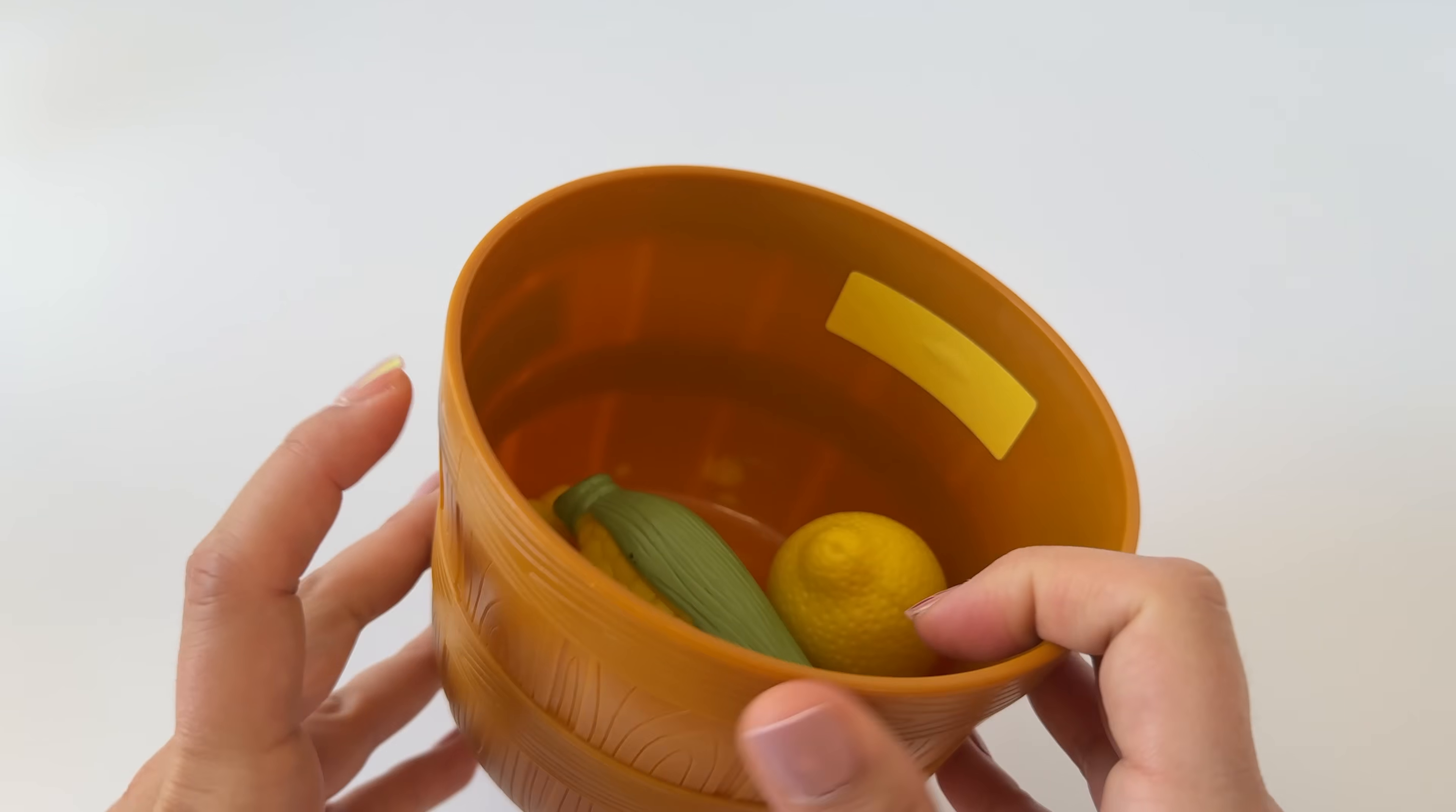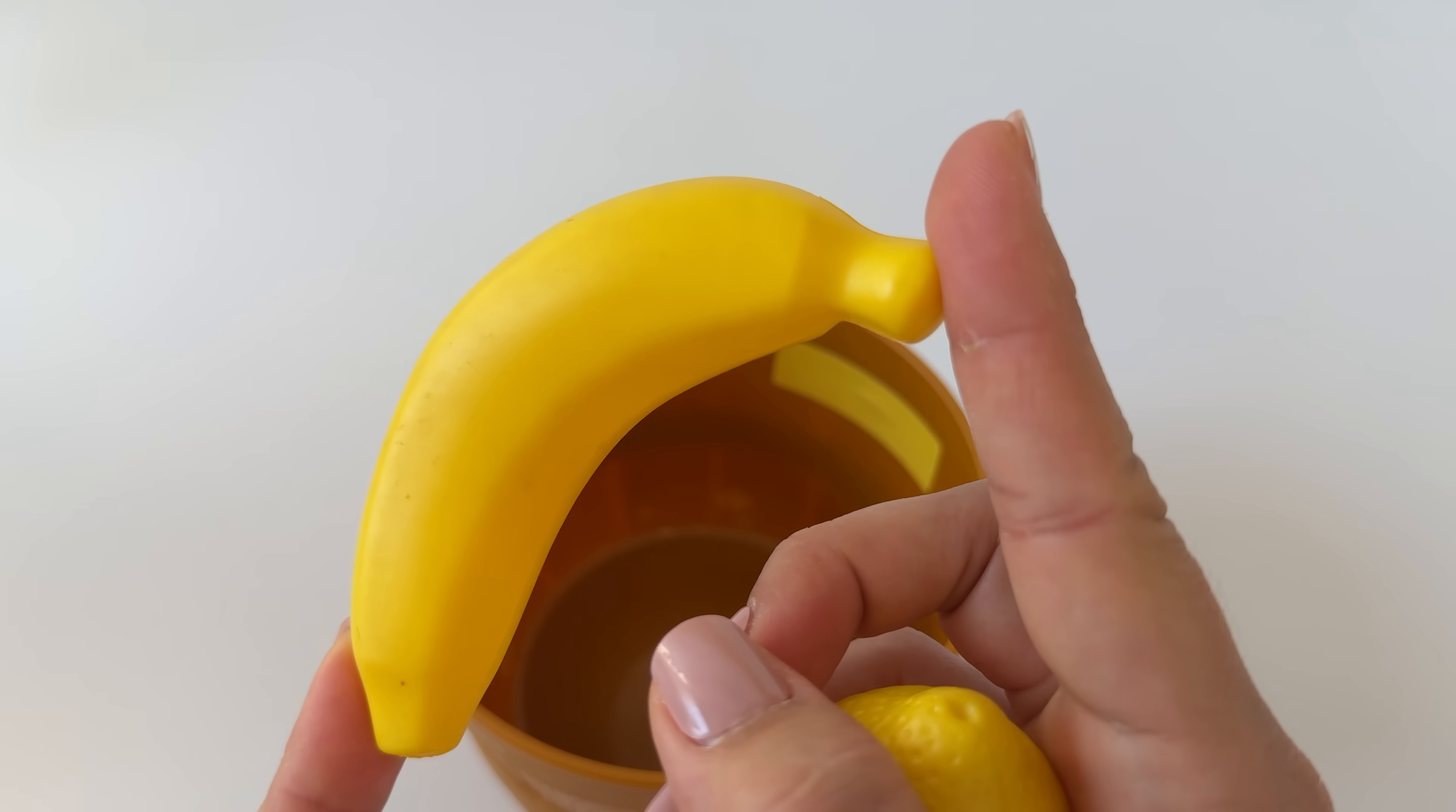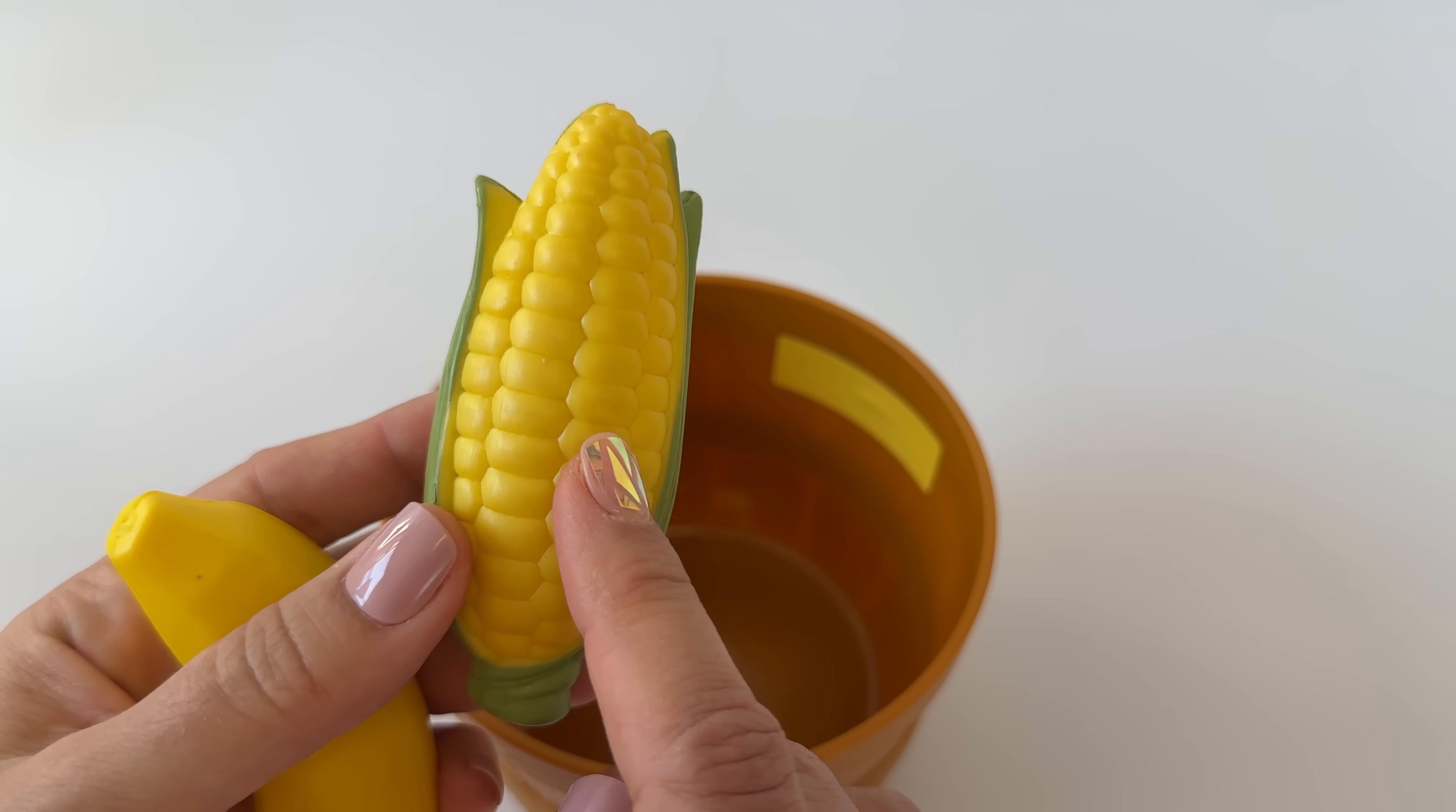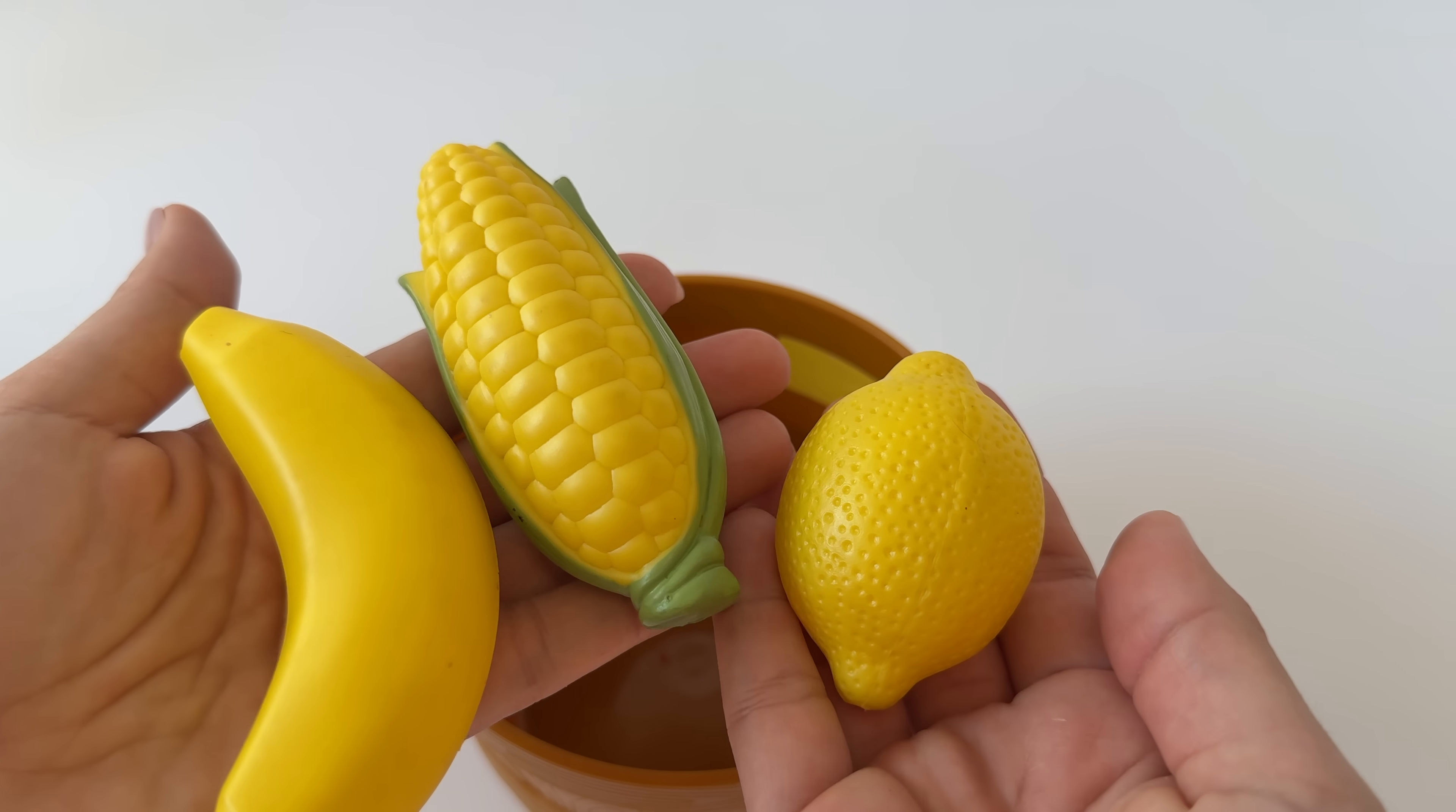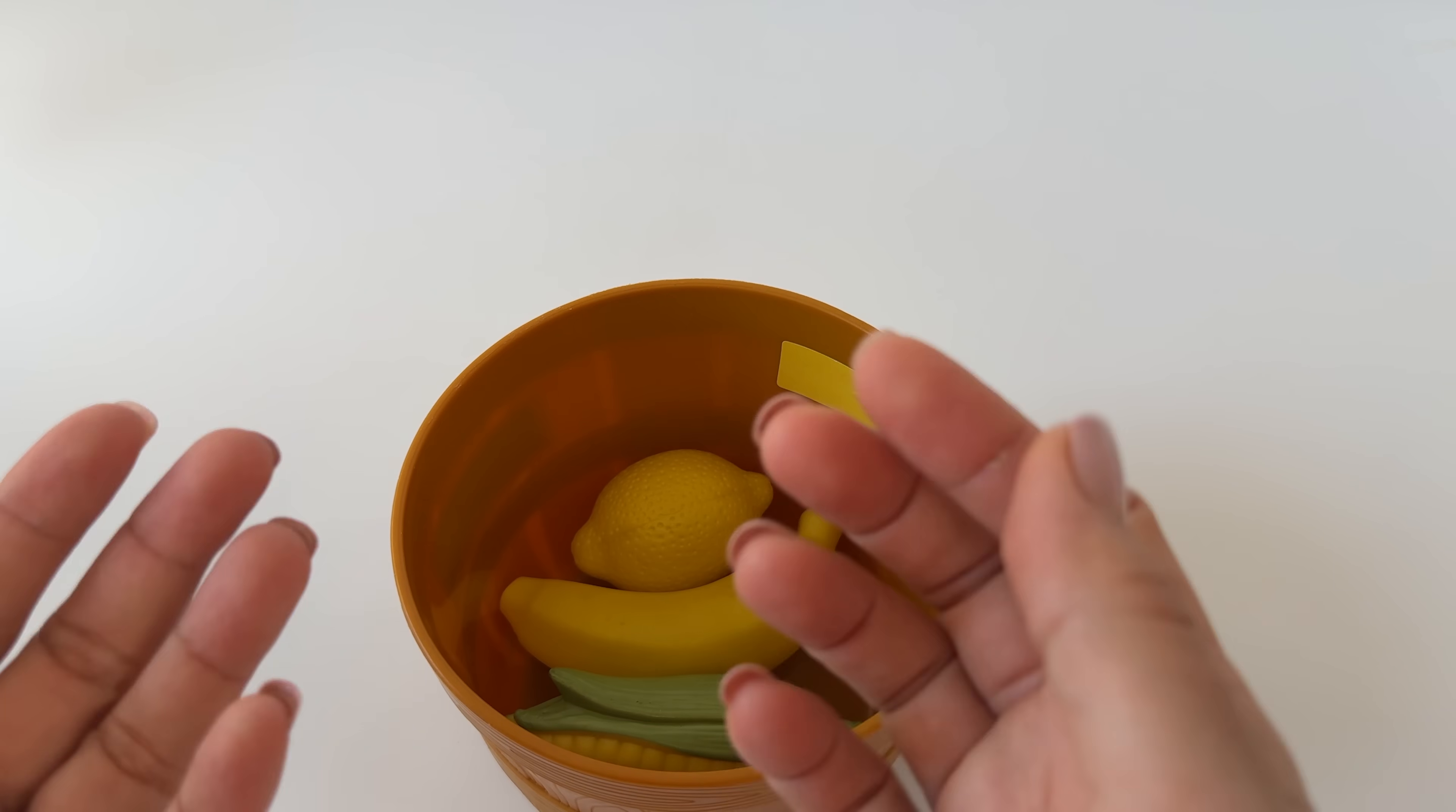Nice work. What's in here? Some yellow foods. One yellow banana. One yellow lemon. And one yellow corn. One plus one plus one. How many do we have? One, two, three. Did you say three? Great.